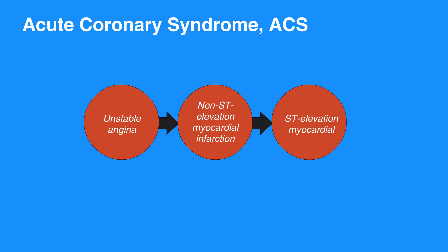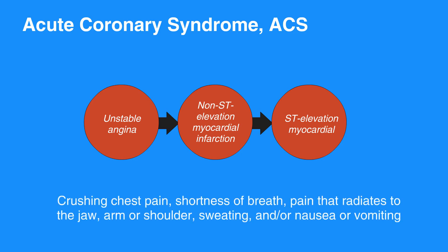ACS is classically recognized by one or more of these symptoms: crushing chest pain, shortness of breath, pain that radiates to the jaw, arm, or shoulder, sweating, and/or nausea or vomiting.